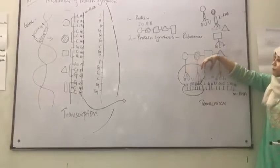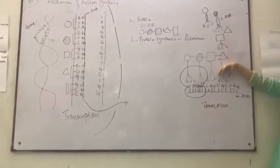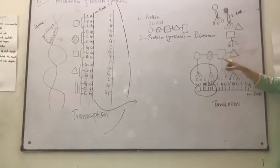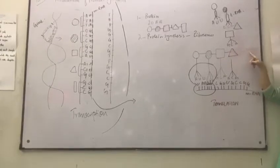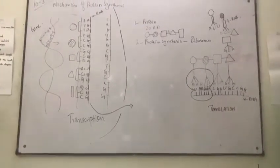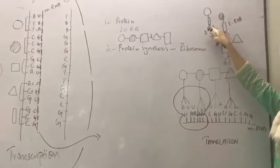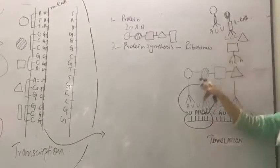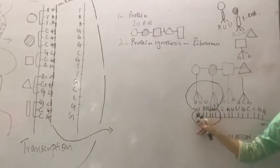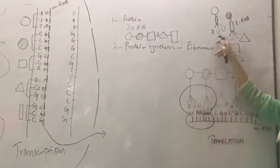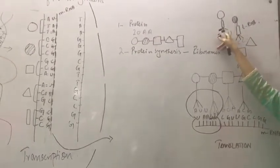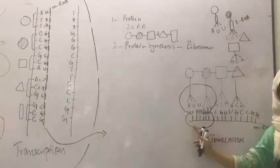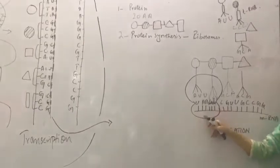The ribosome will move forward and start reading the next six nitrogen bases. In this way, a long chain of amino acids will form, which is known as a protein molecule. The amino acids are carried to the specific site by the transfer RNA. The transfer RNA will carry the appropriate amino acid and bring them towards the messenger RNA on the basis of the exposed base sequence.